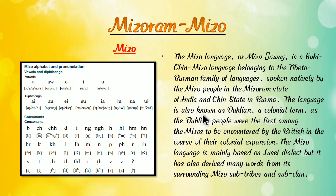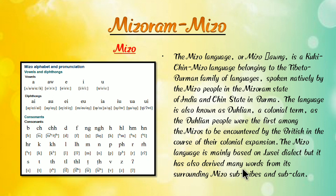The language is also known as Duhlian, as the Duhlian people were the first among the Mizos to be contacted by the British during their colonial expansion. The Mizo language is mainly based on Lusei dialect but has also absorbed many words from surrounding Mizo sub-tribes. Mizo language is most widely used in the state of Mizoram.